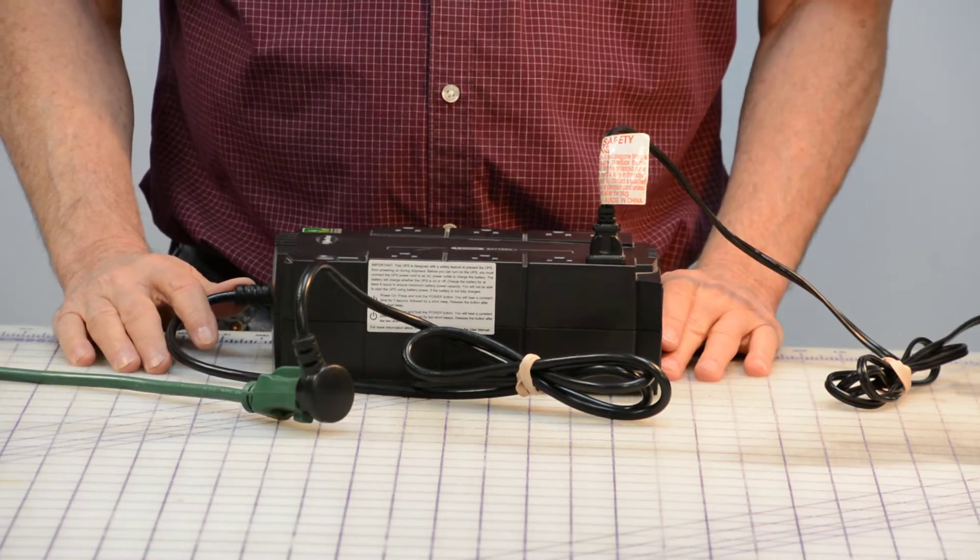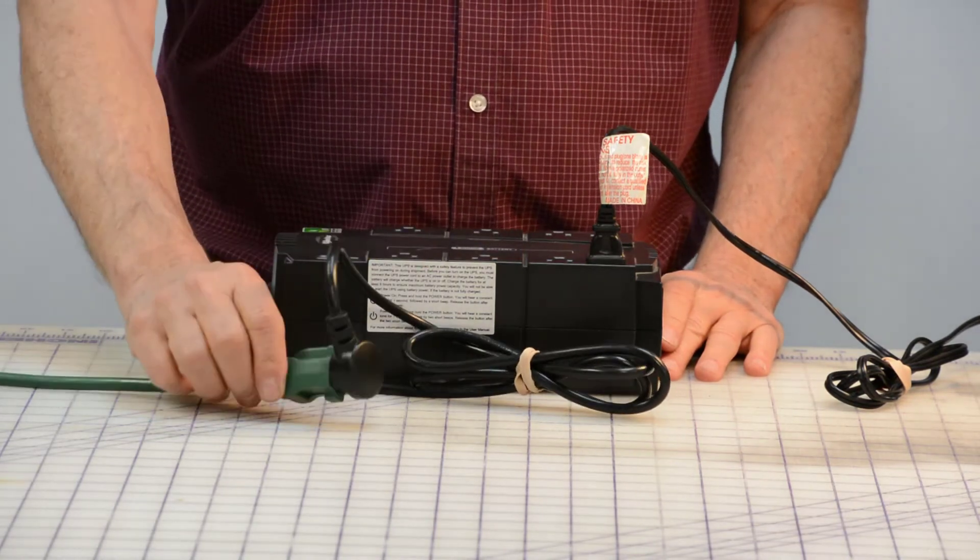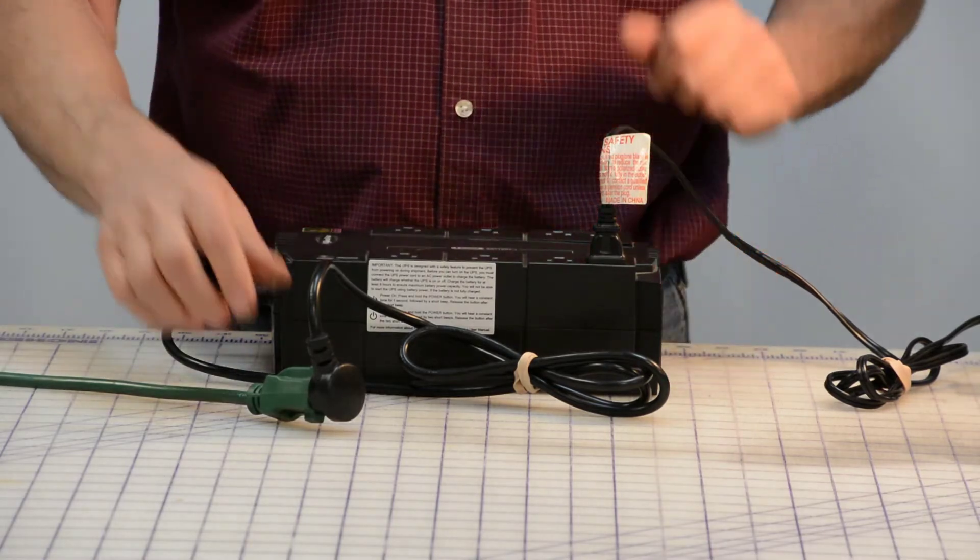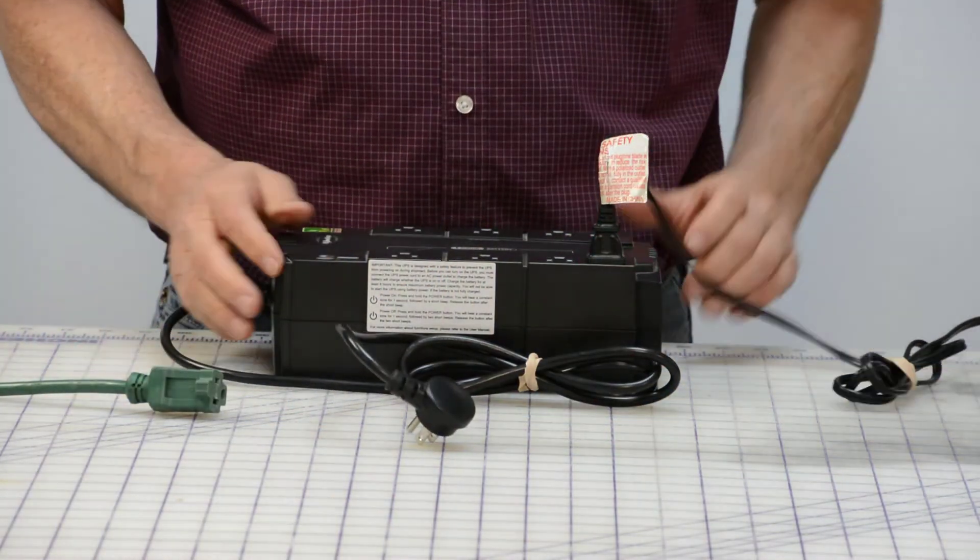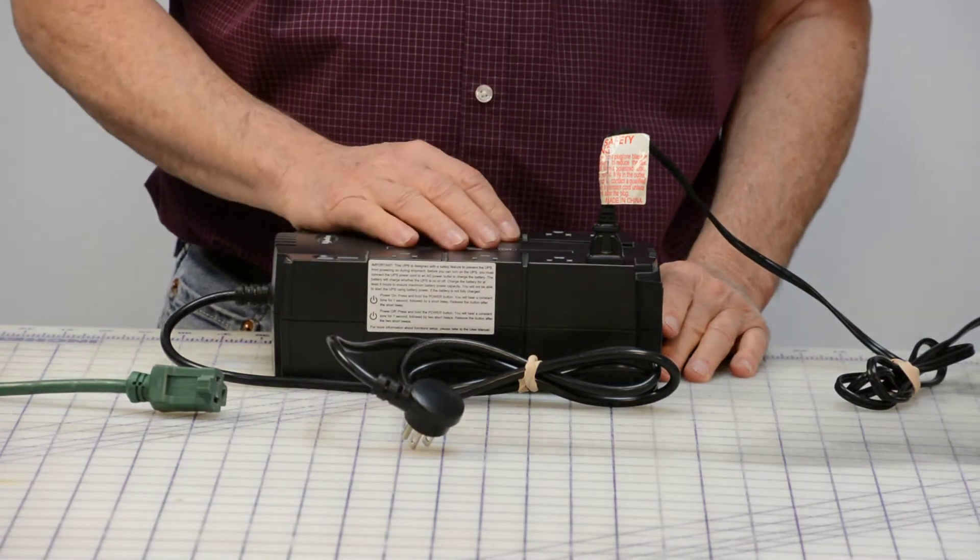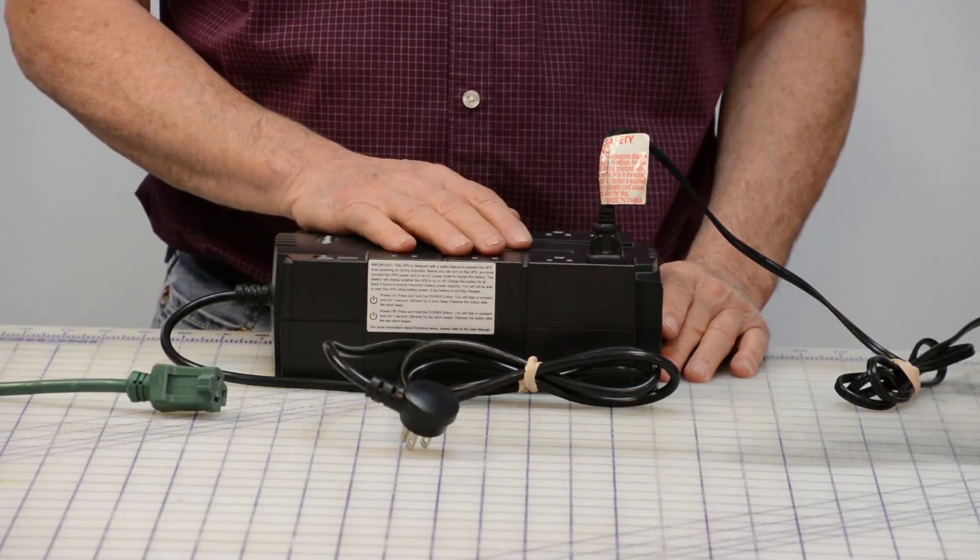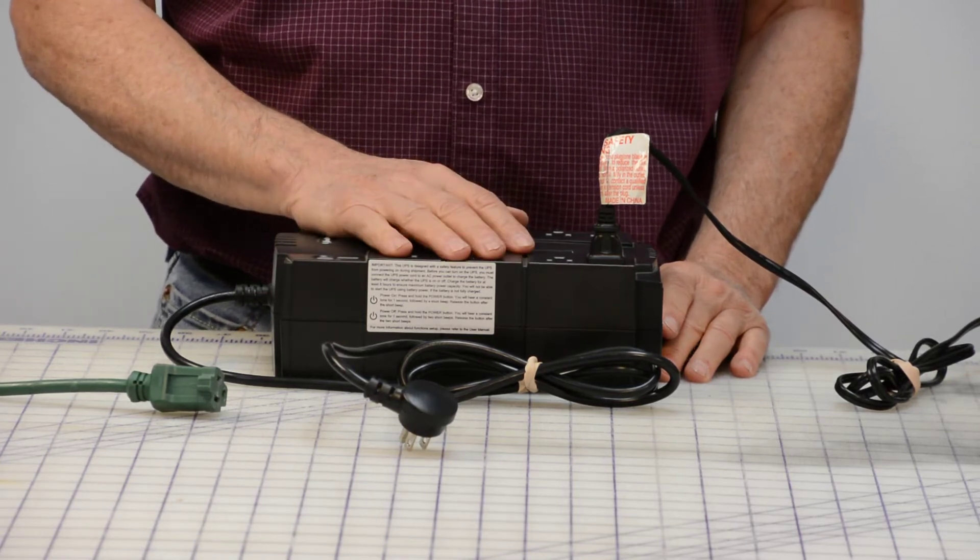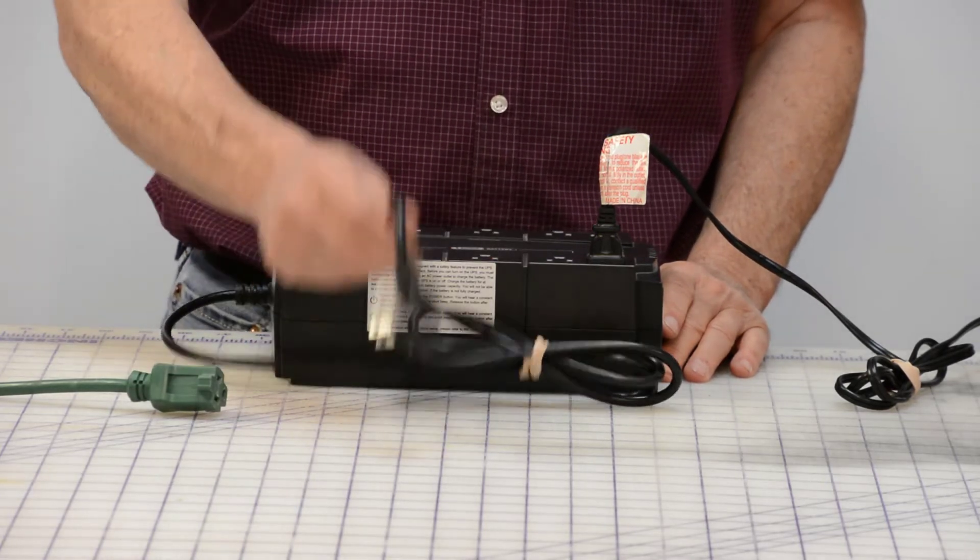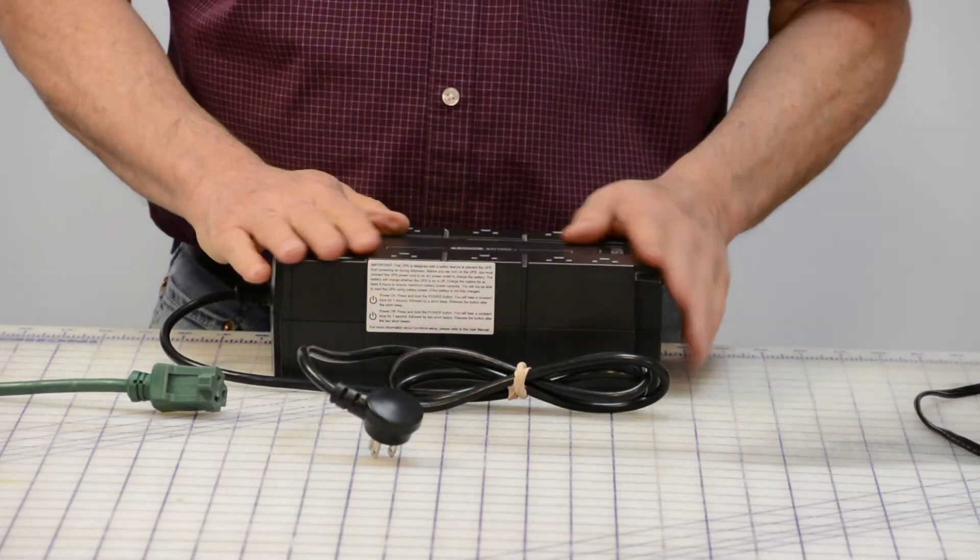Now the way I would recommend that you do this is before you start taking this thing apart, plug it in. Plug something like a lamp into it to make sure it's working. Then unplug the power to it, wait until the lamp dies. This helps discharge the battery that's in here and it will lessen your likelihood of getting some kind of a shock. Just a little safety thing. You don't have to do it that way, but I do recommend that just for safety. So make sure you're unplugged. Unplug your lamp or whatever you had plugged into it as a load.